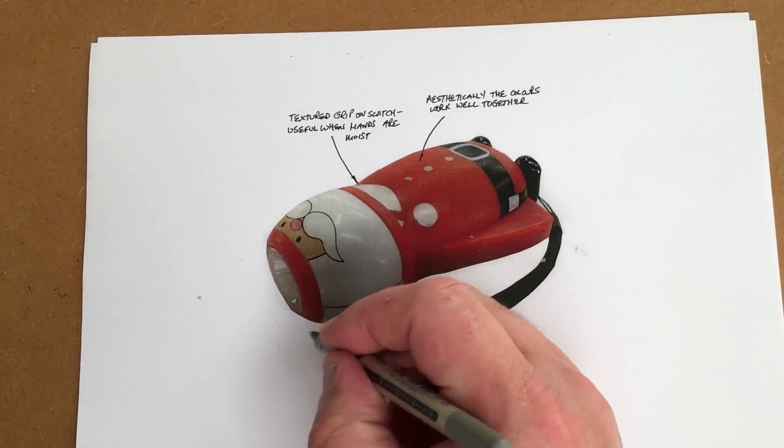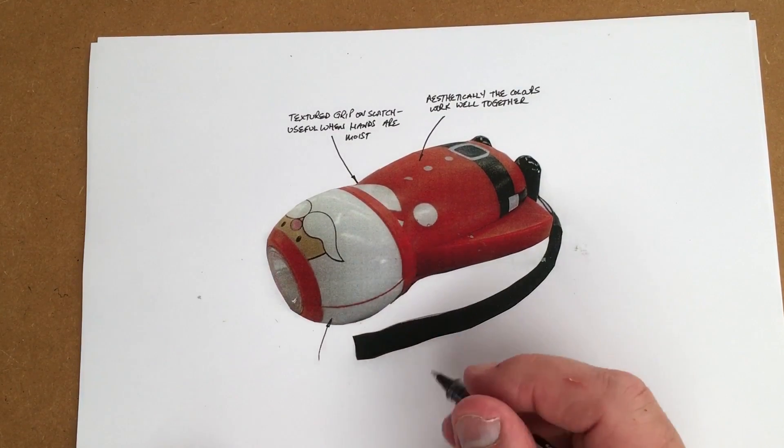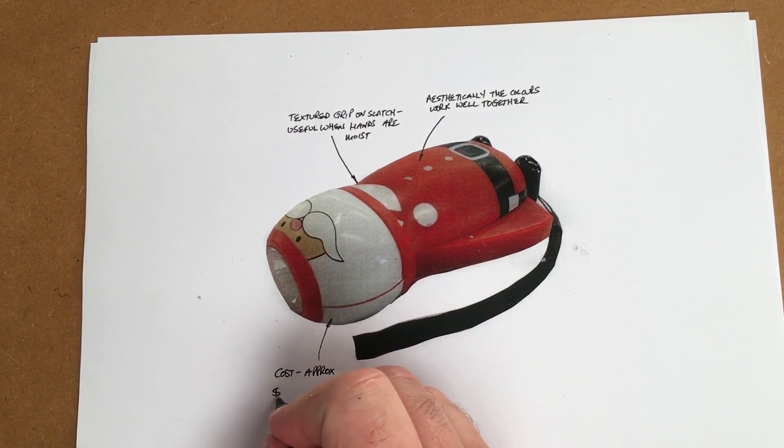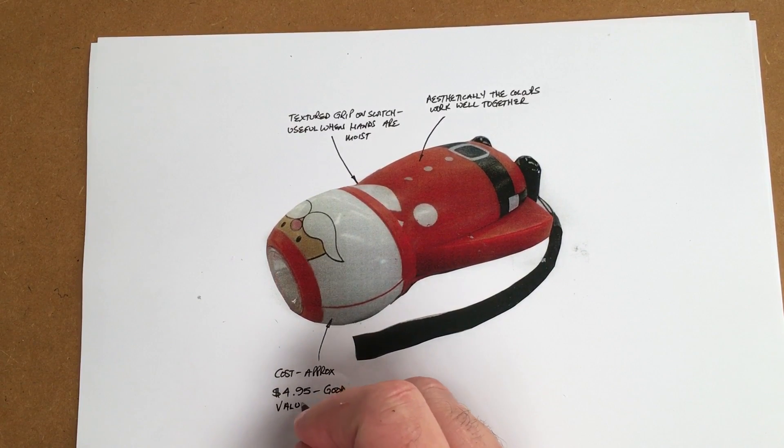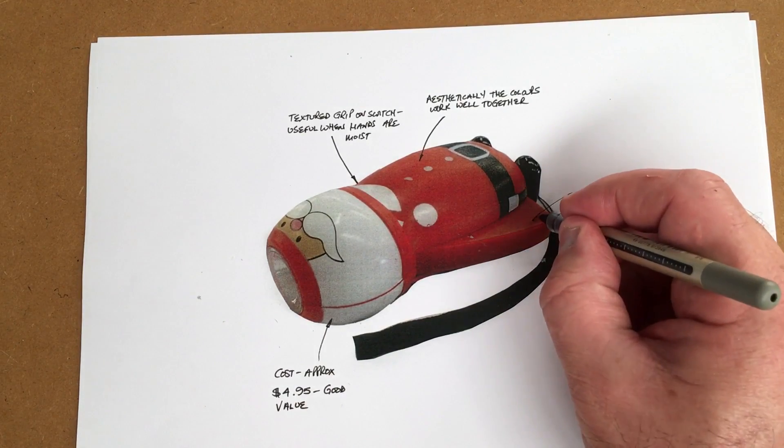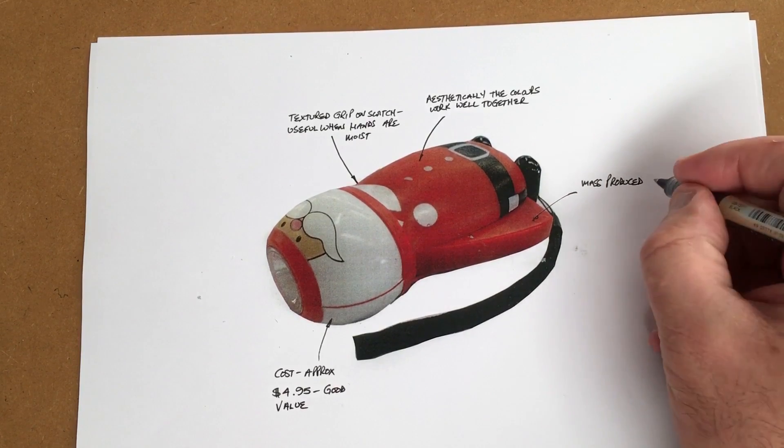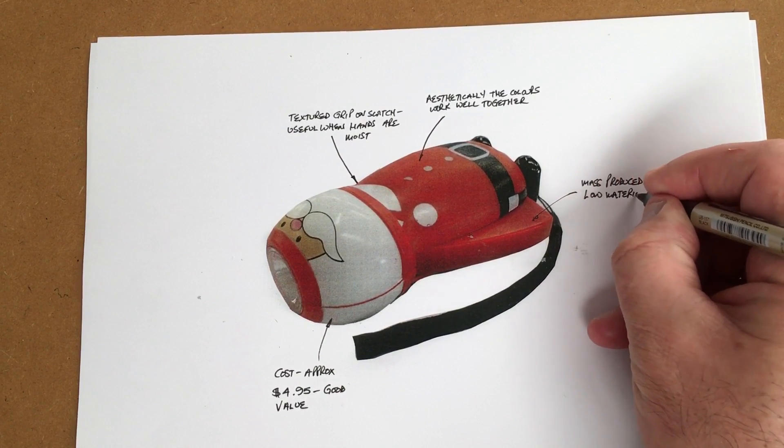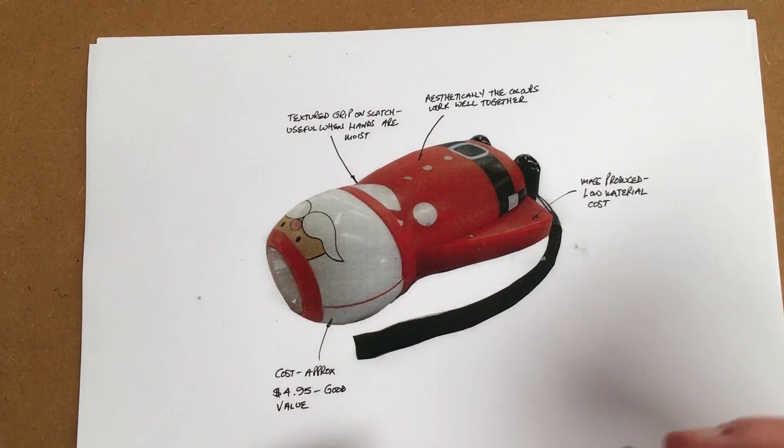For cost, I'll put an arrow here. When you're trying to analyze, write the comments in around to give the sheet some sort of balance. I paid £4.95, and then I'm going to say good value, because I believe that is good value for a little novelty torch. I'm going to say mass-produced, and low material costs because it's mass-produced. Buying a lot of material in bulk keeps the cost down.